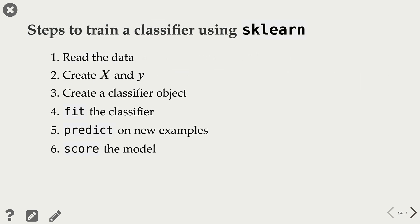In scikit-learn, whenever you want to train a machine learning model, there are a number of steps you need to perform. The first step is reading the data — usually the data comes in a tabular format in supervised machine learning, and in Python you can use pandas to read this data. The next step is separating X and Y; the data comes as one table, and you need to separate your features and target from that table.